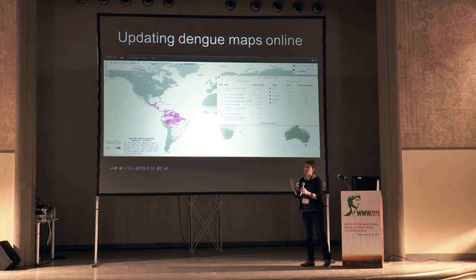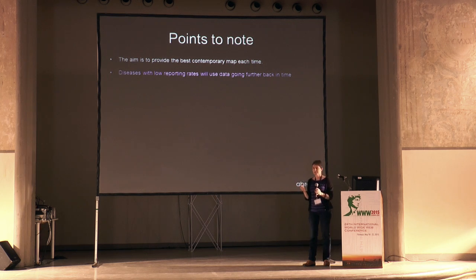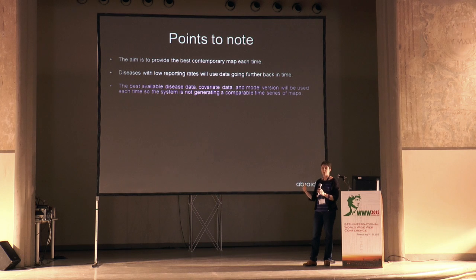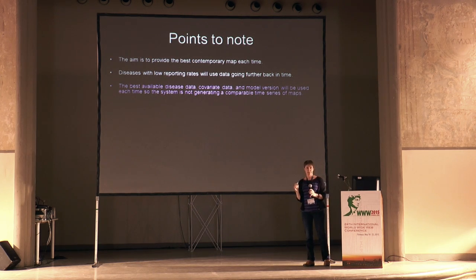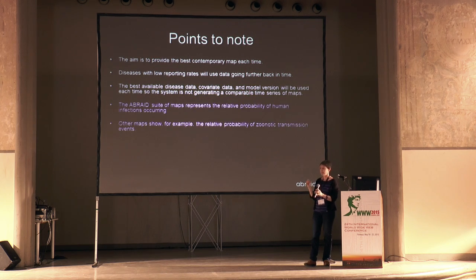In this example the top predictor for dengue at this time was precipitation. Some important points to note: we are aiming to produce the best possible contemporary map at each point in time, and we only go as far back in the data as we need to produce a robust map. Because we're producing the best map we can each time, our maps aren't necessarily a time series — though you can use this data to produce one.